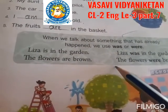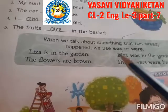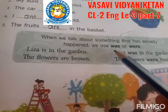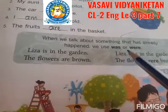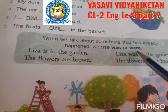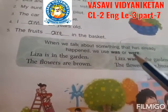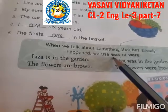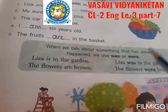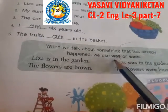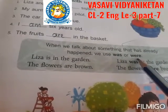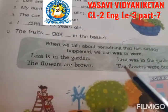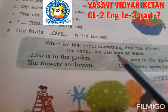For something happening now — present situation — we use 'is' or 'are.' For something that has already happened — already happened — we use 'was' or 'were.'